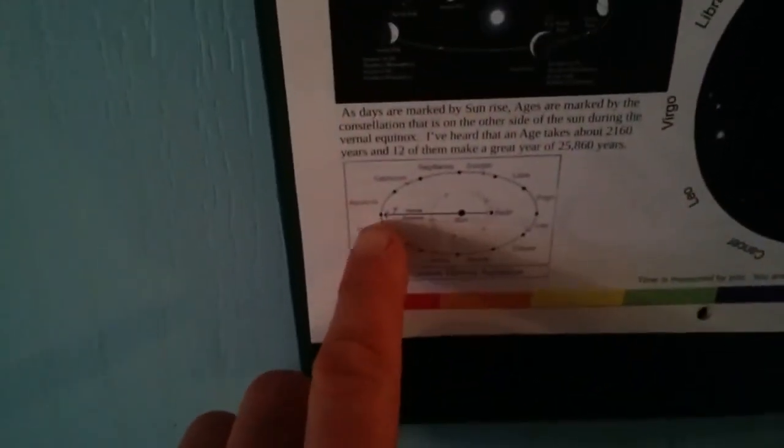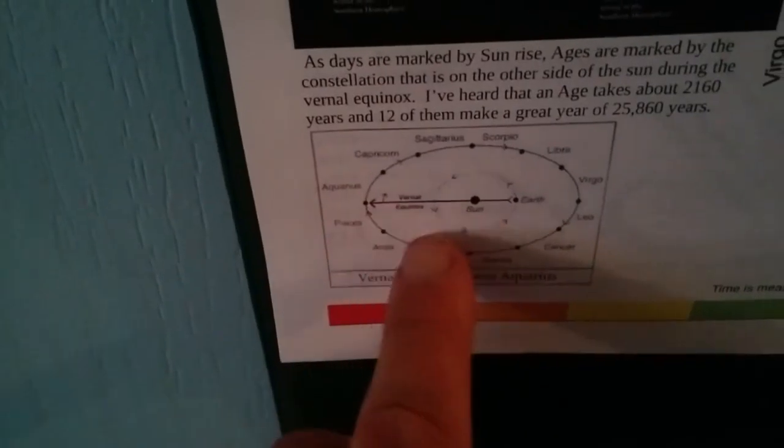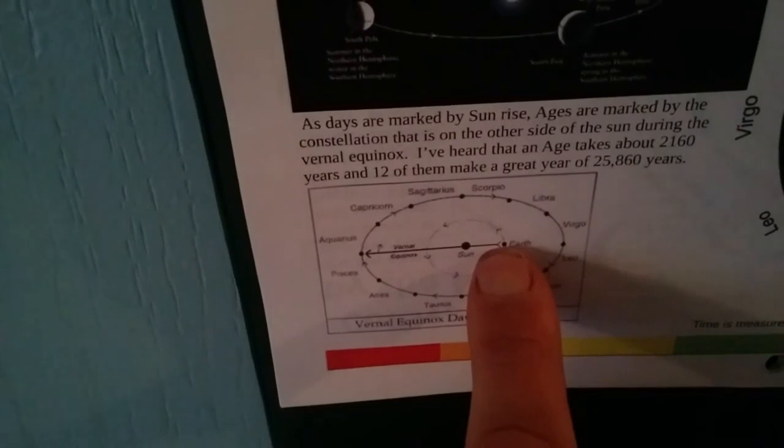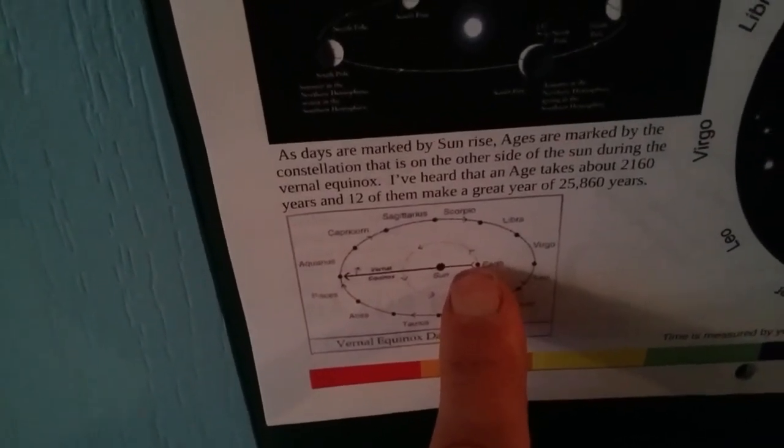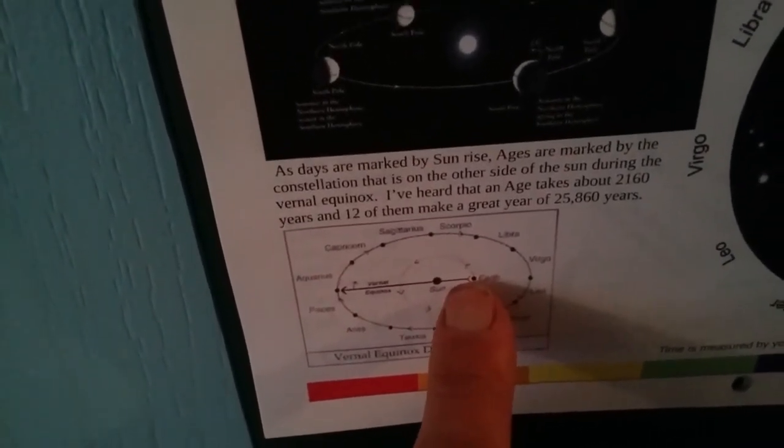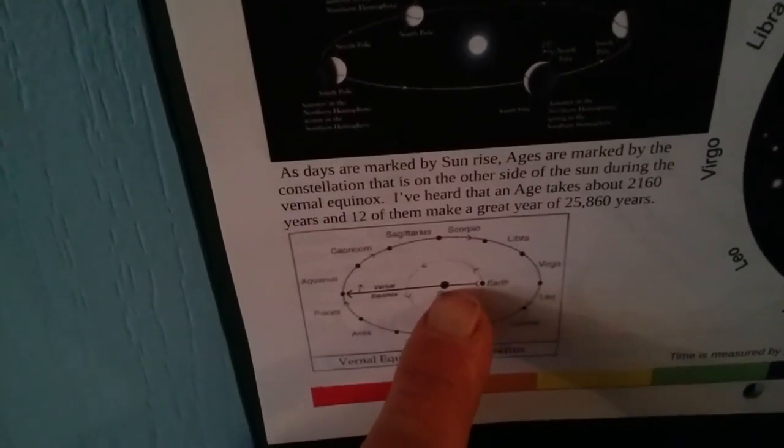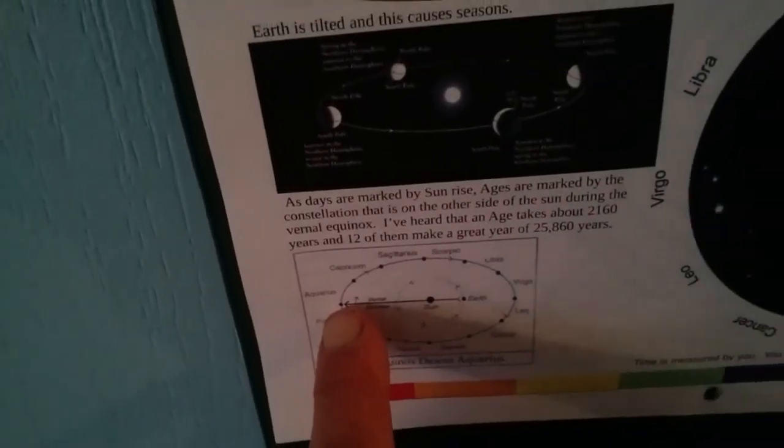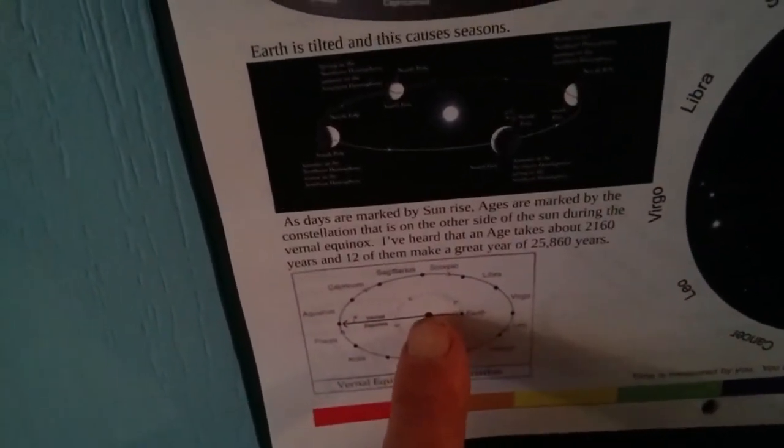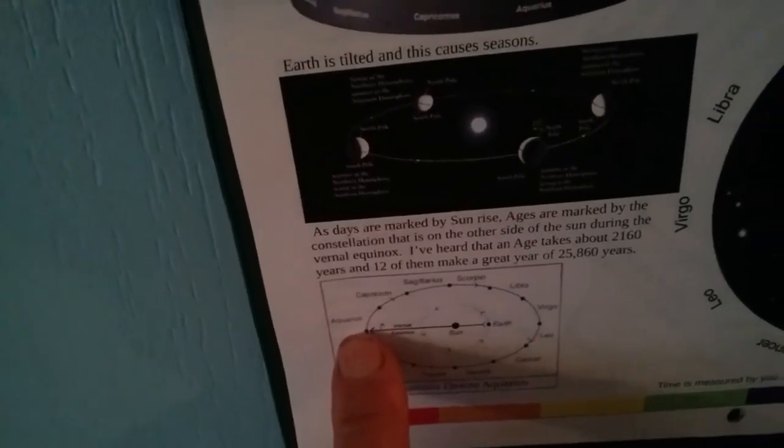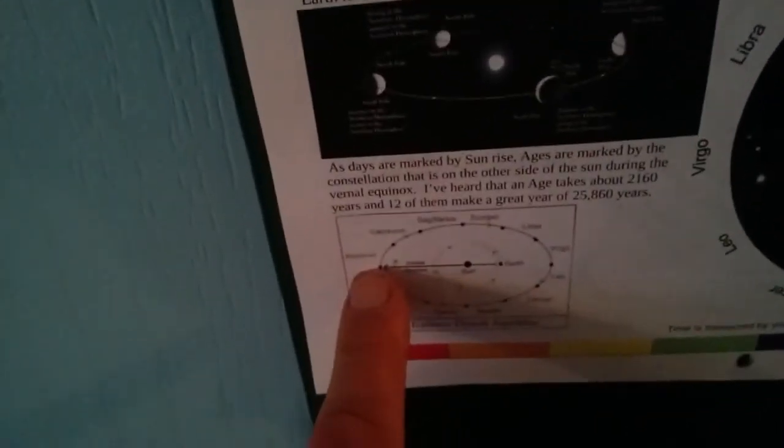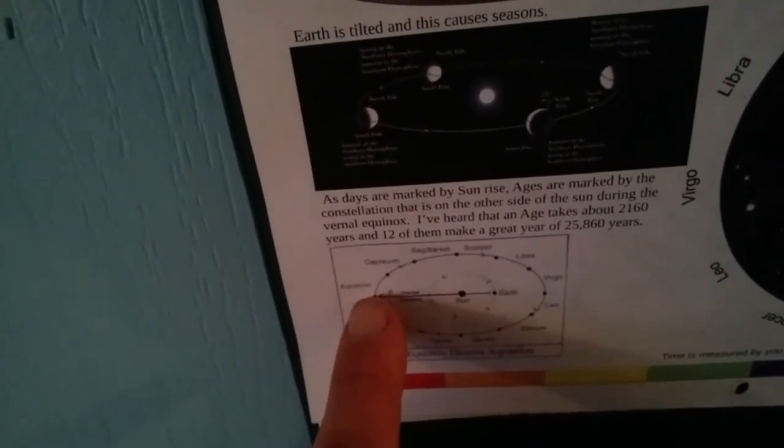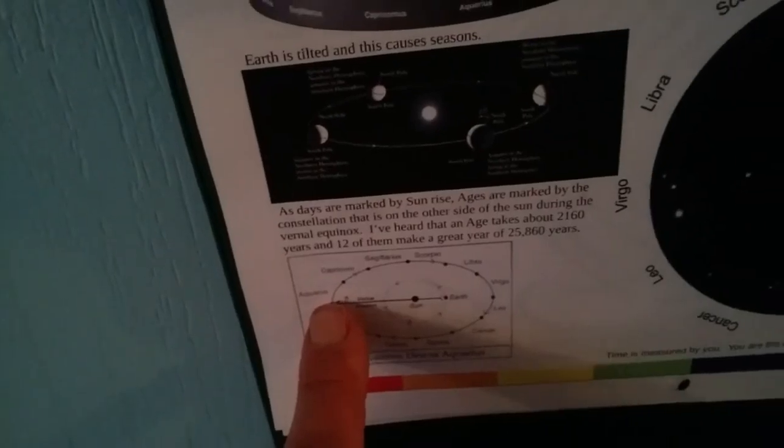And then it talks about the procession of the equinox when the vernal equinox happens and we measure what constellation is directly behind the Sun. From the Earth, the Sun, and the constellation behind the Sun. It's the dawning of the Age of Aquarius. There's Aquarius. We're coming out of the Age of Pisces. That's the procession of the equinox.